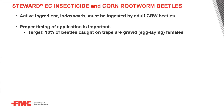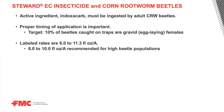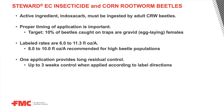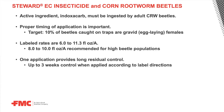Proper timing is essential. We want to make sure that we're getting that product out when 10% of the population contains female beetles that are gravid or egg-laying. Proper use rates: labeled rates are 6 to 11.3 fluid ounces per acre per application; however, in most situations a 6 to 10 fluid ounce per acre rate will work, with heavier pressure leaning towards 8 to 10 fluid ounces per acre. You get long residual control with one application of Steward EC insecticide — our data shows up to three weeks, possibly a little longer, of management of adult corn rootworm beetles.